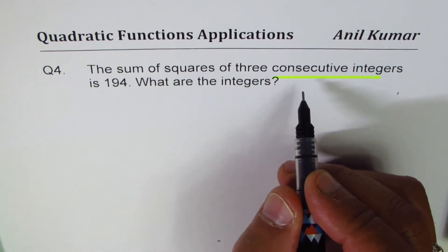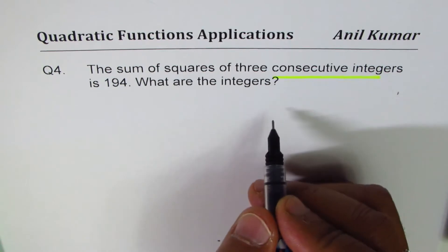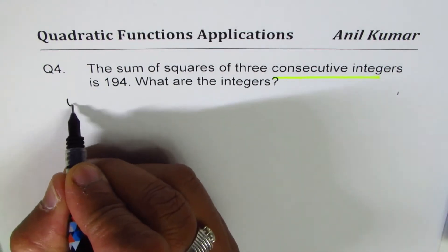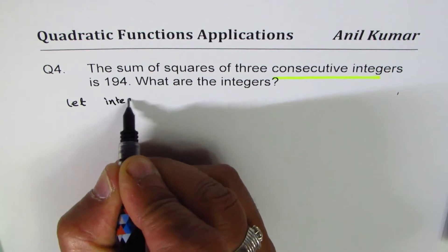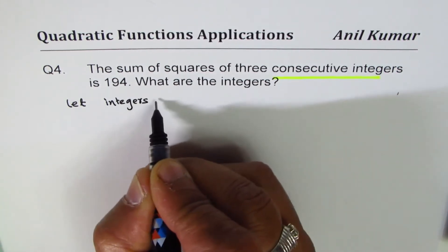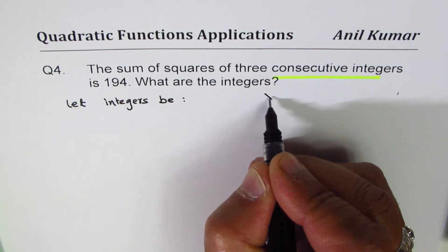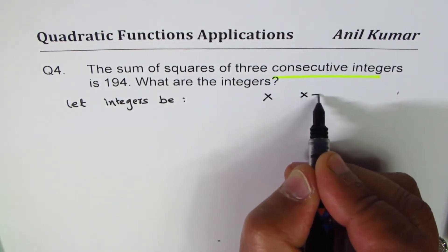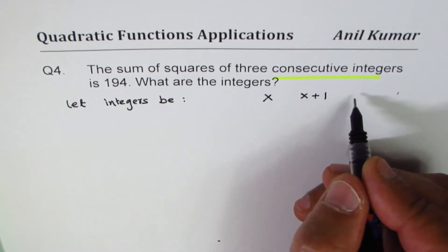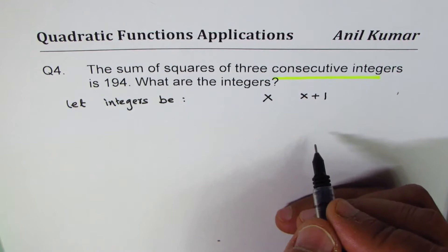Now let's define three consecutive integers. If I take x as one of the integers, the next one will be x plus one, and after that x plus two — so we get three consecutive integers.